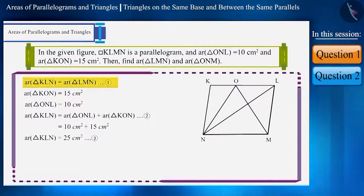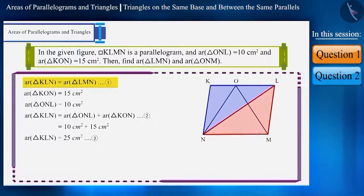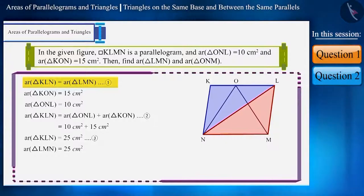From equation 1, we can say that the area of triangles KLN and LMN are equal. This means the area of triangle LMN will also be equal to 25 cm².